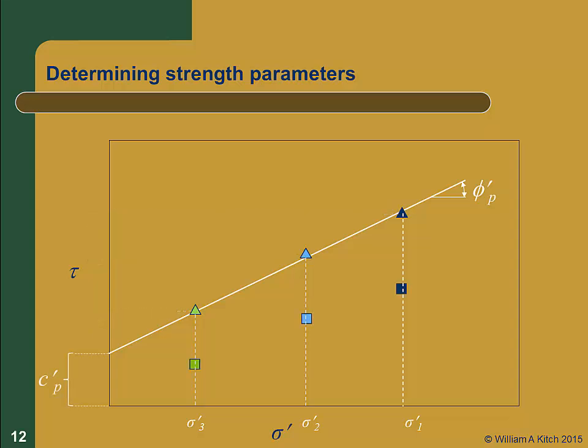Similarly, we can plot the residual strength values as shown here by the squares. We then fit a line to these points and determine the effective residual friction angle, phi prime r, and the effective cohesion, C prime r. This particular plot illustrates data that might be measured from testing an over-consolidated clay soil. This can be determined by the significant cohesion measured from peak strength. The residual cohesion is generally very small, or near zero, as we see here.